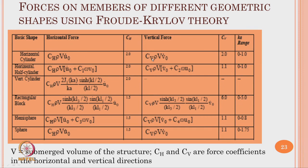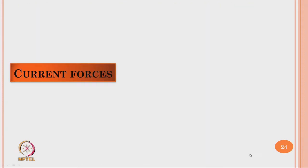The governing equation to estimate force on a horizontal cylinder and force on a vertical cylinder — given by the velocity potential and dynamic pressure variation — are available. The horizontal force per unit length reduces to a conventional form where C_H accounts for diffraction effects. Forces on members of different geometric shapes using Froude-Krylov theory are summarized in tabular form, including recommended values of C_H for horizontal cylinder, horizontal half-cylinder, vertical cylinder, rectangular block, hemisphere, and sphere.